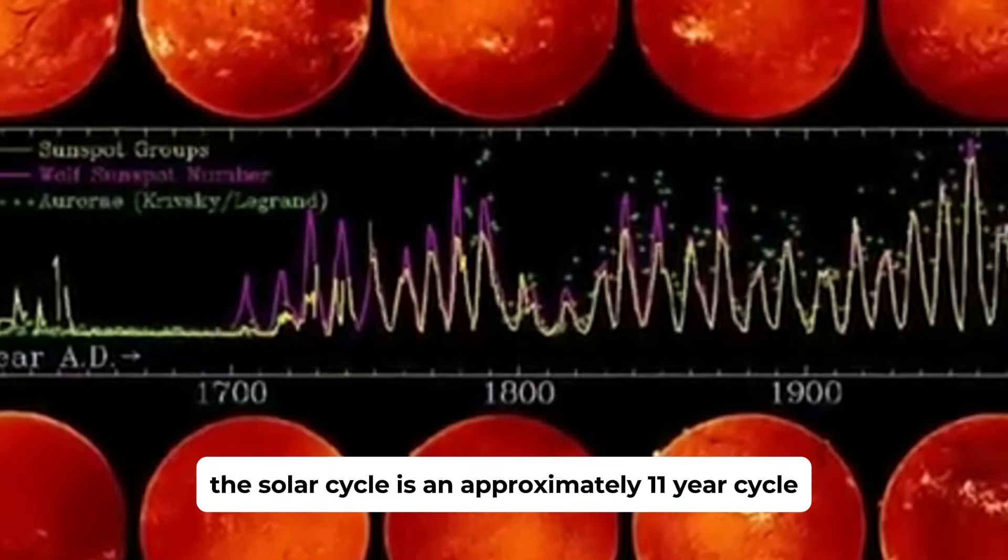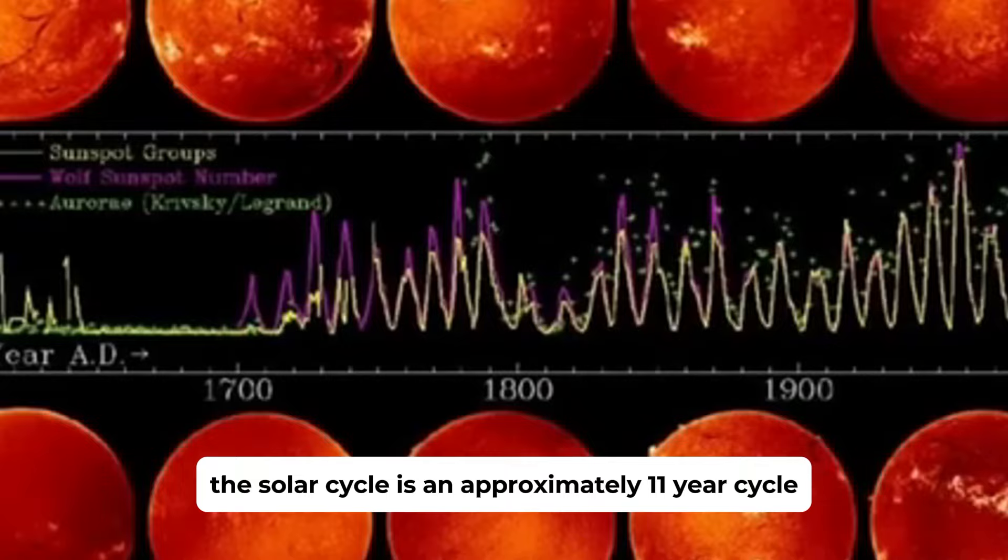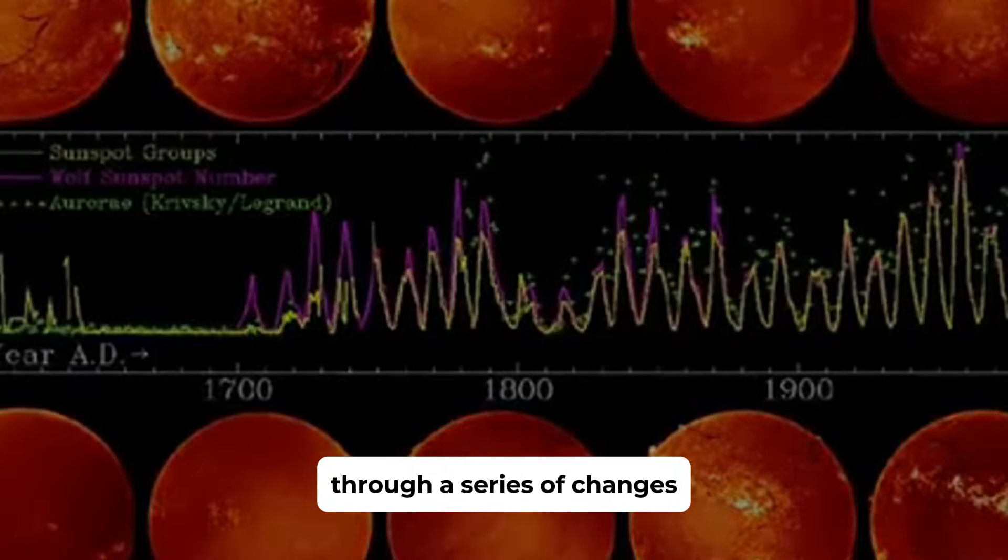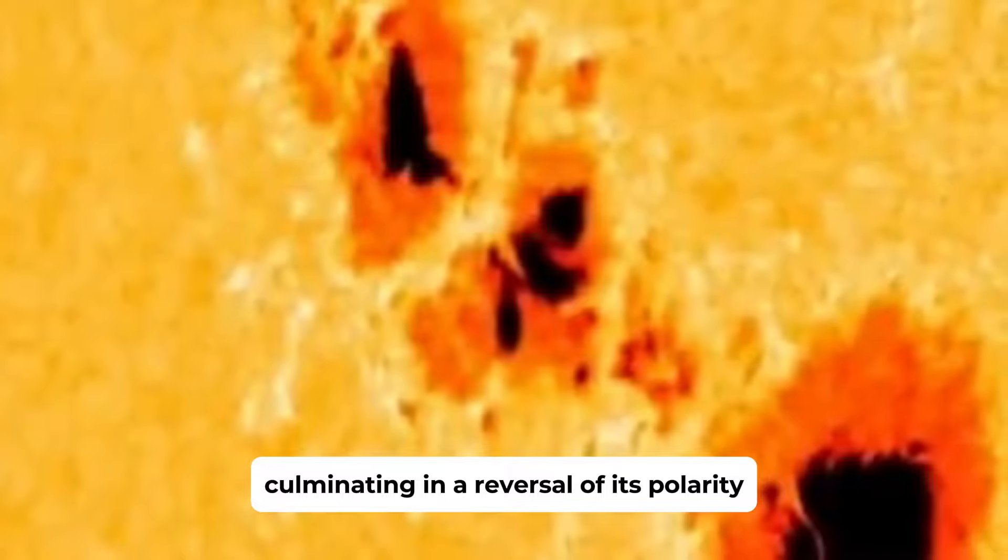The solar cycle is an approximately 11-year cycle during which the Sun's magnetic field goes through a series of changes, culminating in a reversal of its polarity.